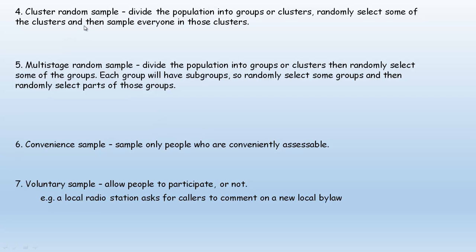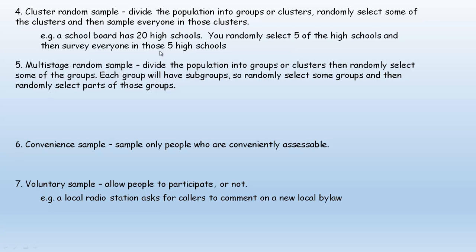Number four: a cluster random sample. You divide the population into groups or clusters — it might already be naturally grouped. Then you randomly select some of the clusters and sample everyone in those clusters. For example, if a school board has 20 high schools, you randomly select five of them and survey everyone in those five schools. That's a cluster random sample.